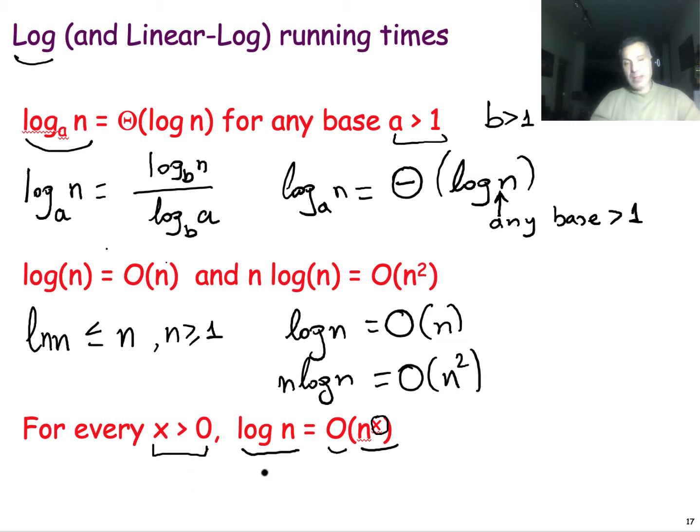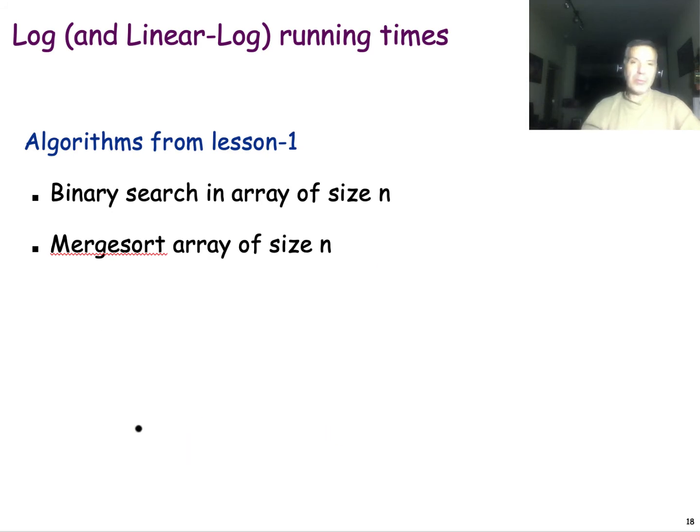What this means is that a logarithmic running time grows more slowly than any polynomial function. Again, I want to remind you from lesson 1, we saw binary search on an array of size n. That algorithm has a running time that is proportional to log n, so we can write that this is big O log n. And for merge sort, we showed that the running time is O(n log n).